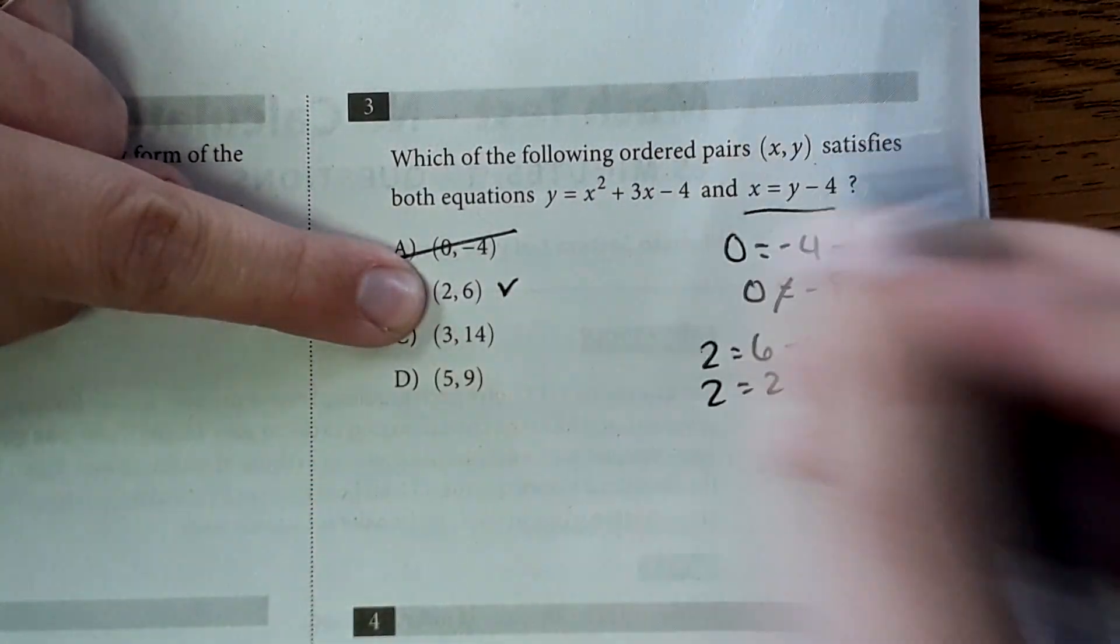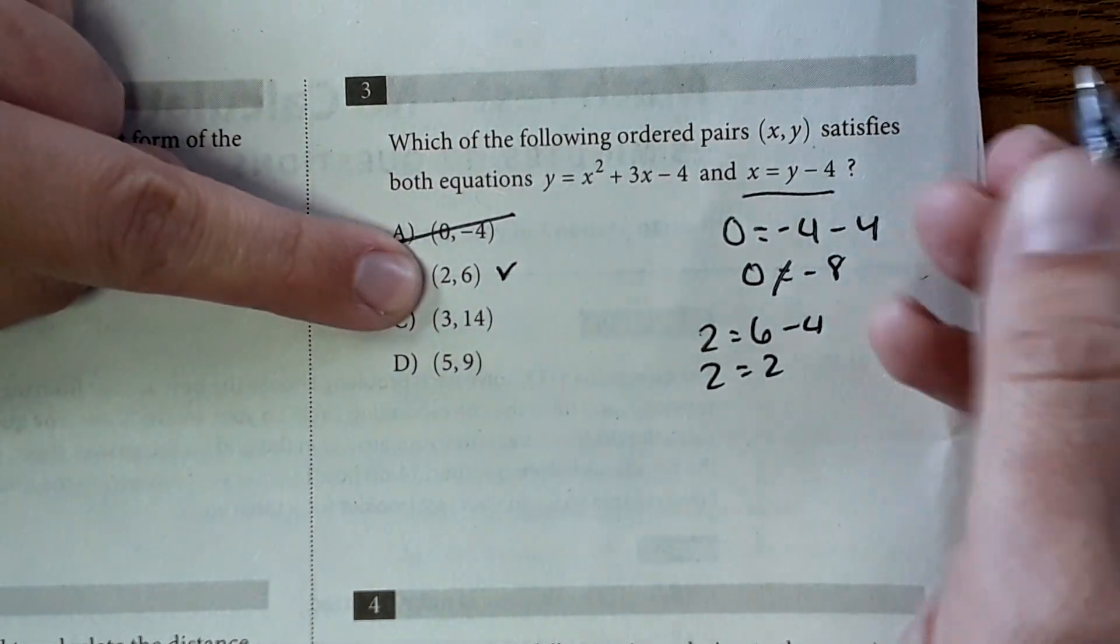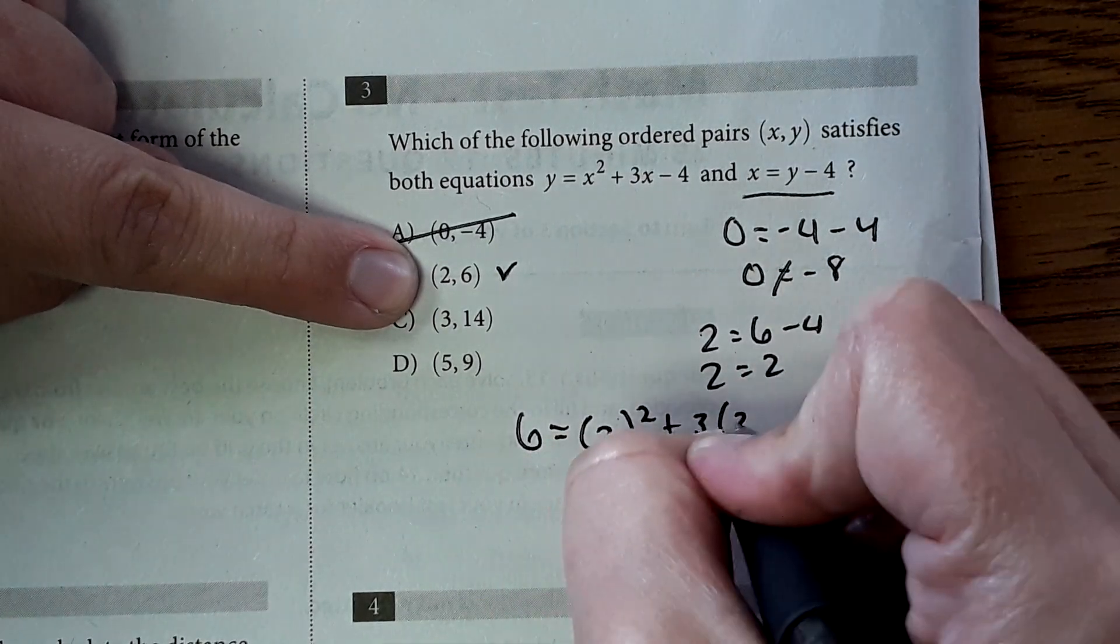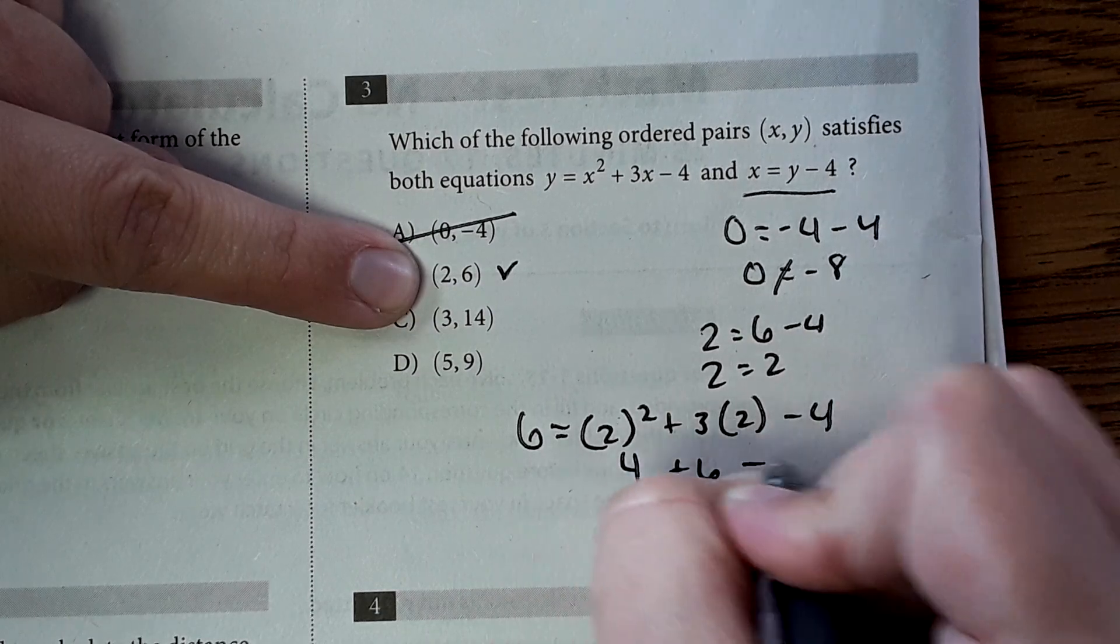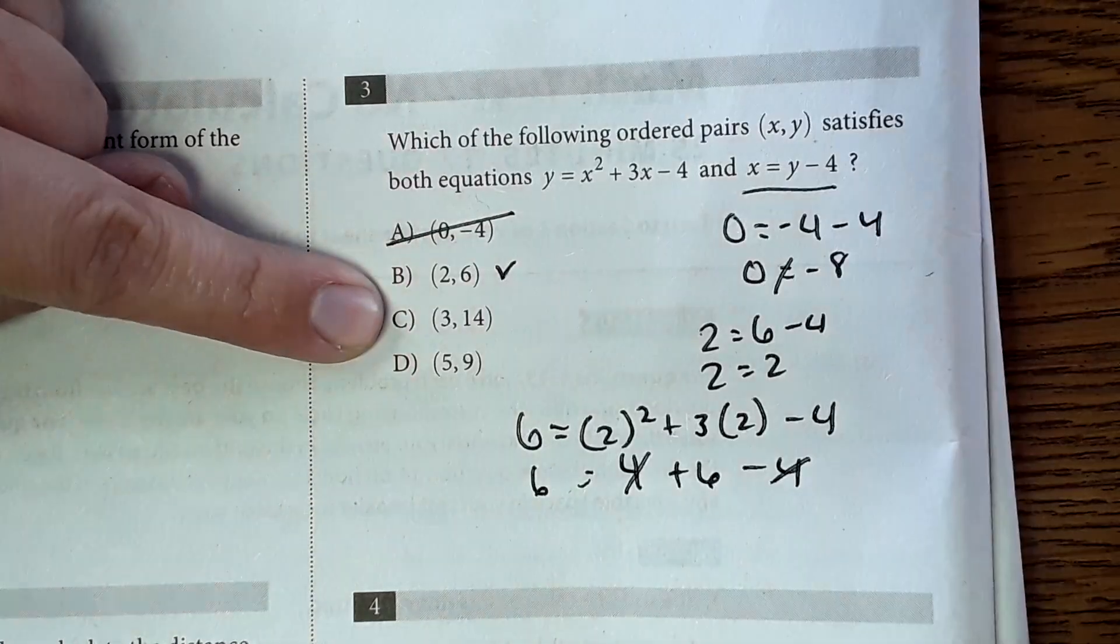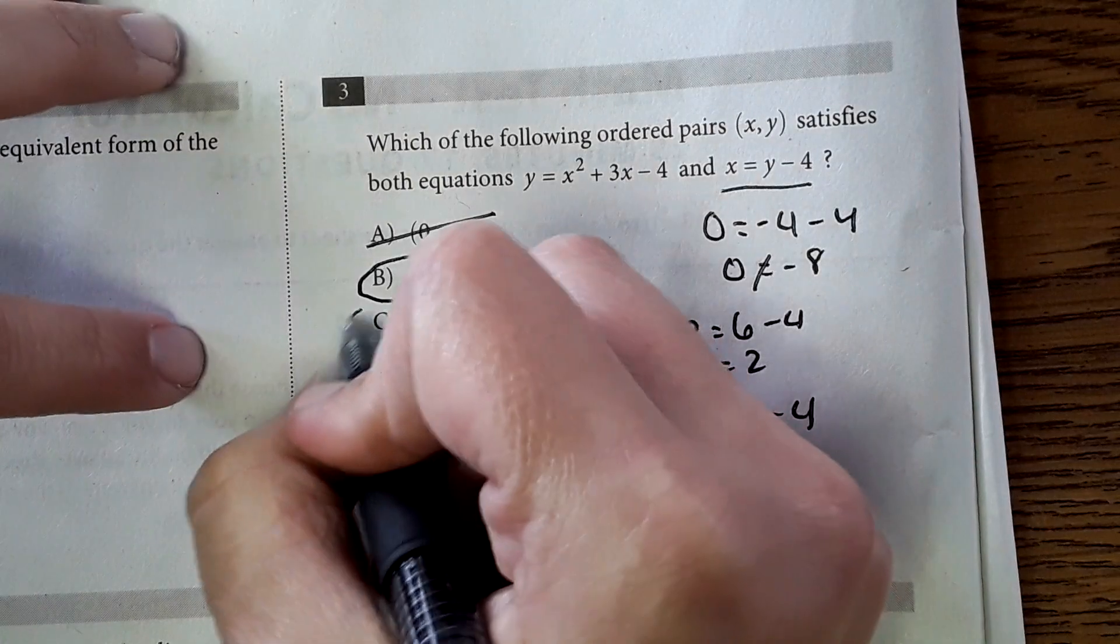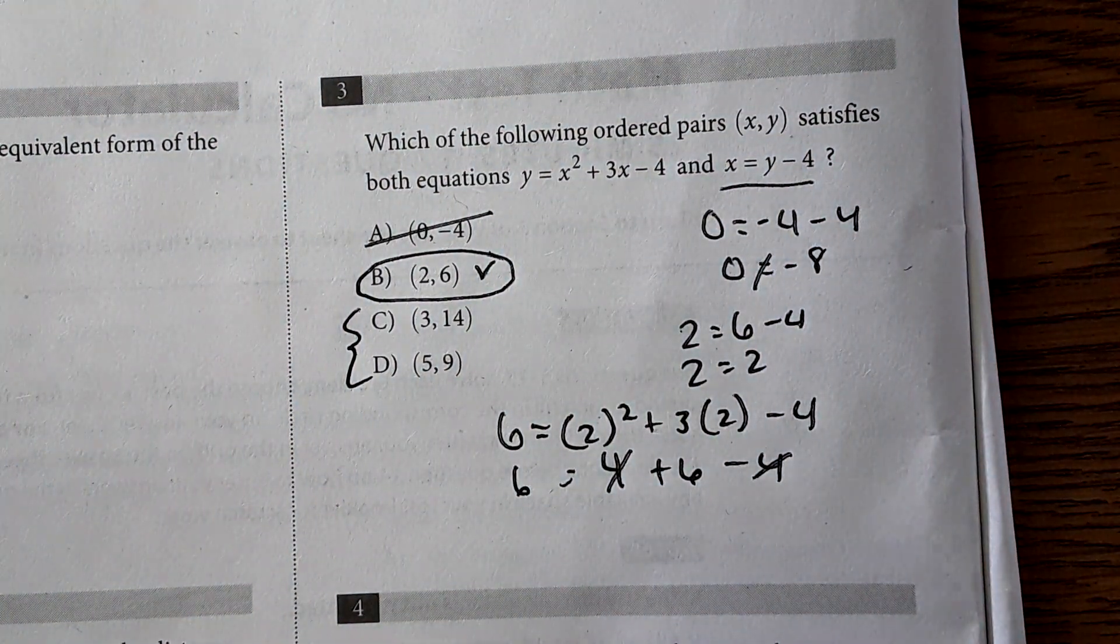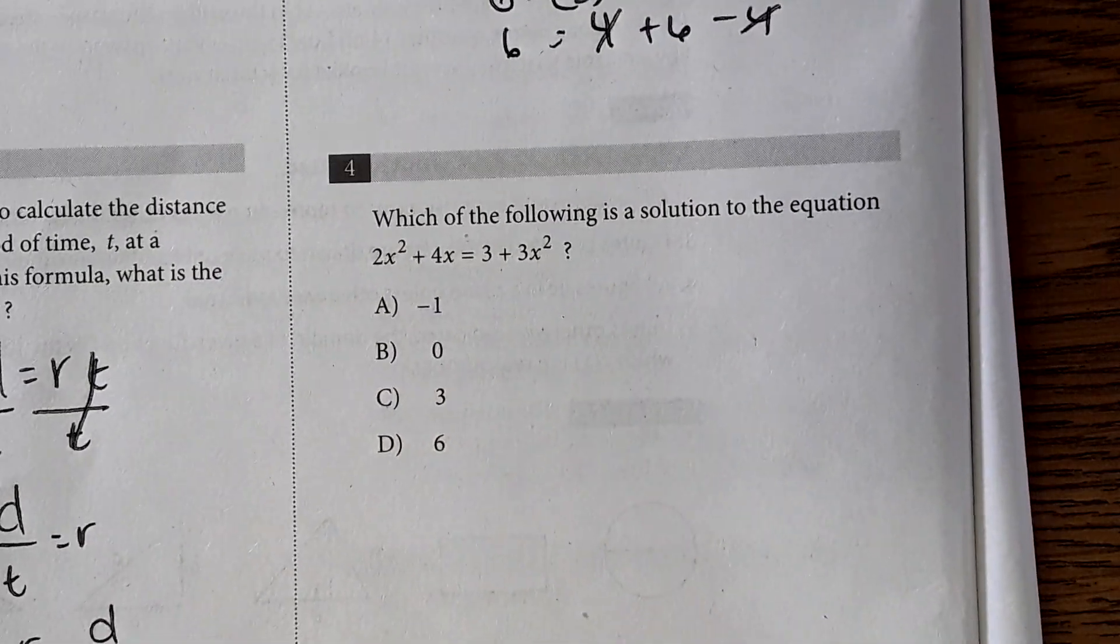Now I'm going to take this and plug it into the second equation and see if it works. If it does work, this is going to be the correct answer. So I get six equals two squared plus three times two minus four. So two squared would be four plus six minus four. This cancel. Four minus four is zero. And six does equal six. It works for both. So B is the correct answer. If I have extra time at the end, I may check these just to make sure I didn't make an error here. But time is important when it comes to the PSAT. We only have 25 minutes. So we're going to move on to the next one.